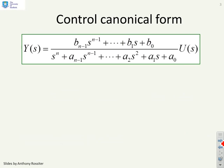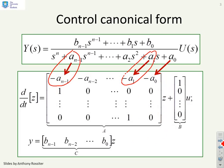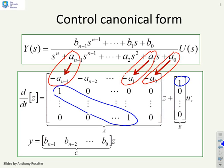As a reminder, the control canonical form: given an underlying transfer function model, the corresponding canonical form places the parameters of the denominator polynomial along the top row of the A matrix, with ones on the sub-diagonal and zeros elsewhere. For B, there is a one at the top and zeros elsewhere. The key link to remember is between the parameters of the denominator polynomial and where they appear in the A matrix.